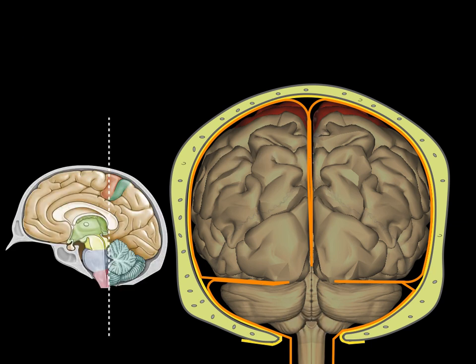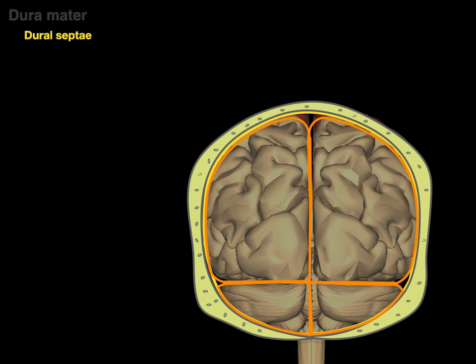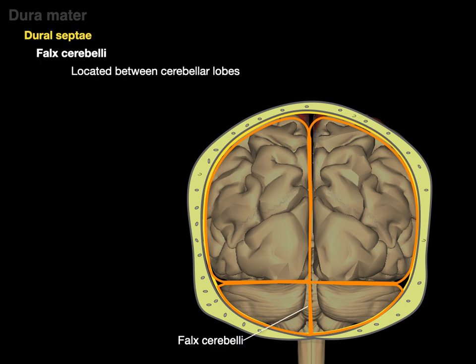Now we take this section and move it back a little bit, more posterior to the foramen magnum. And we're going to see the falx cerebelli, which is located between the cerebellar lobes — right along the vermis between the two cerebellar hemispheres.